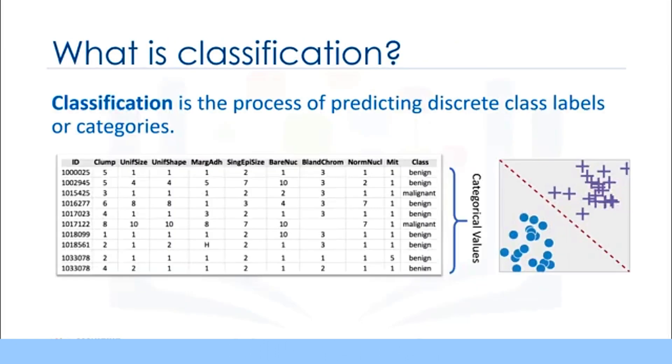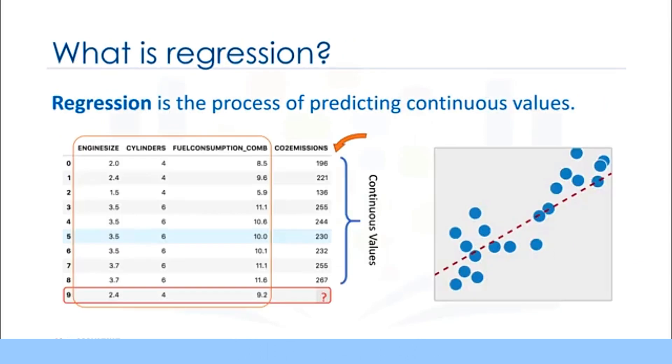Classification is the process of predicting a discrete class label or category. Regression is the process of predicting a continuous value as opposed to predicting a categorical value in classification. Look at this data set. It is related to CO2 emissions of different cars. It includes engine size, cylinders, fuel consumption and CO2 emission of various models of automobiles. Given this data set you can use regression to predict the CO2 emission of a new car by using other fields such as engine size or number of cylinders.